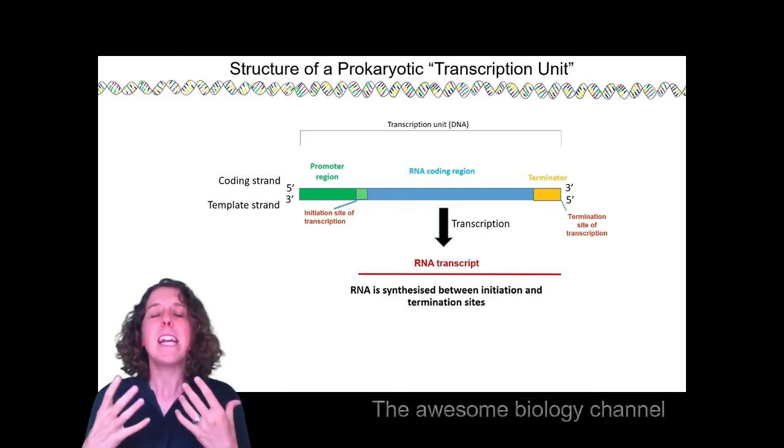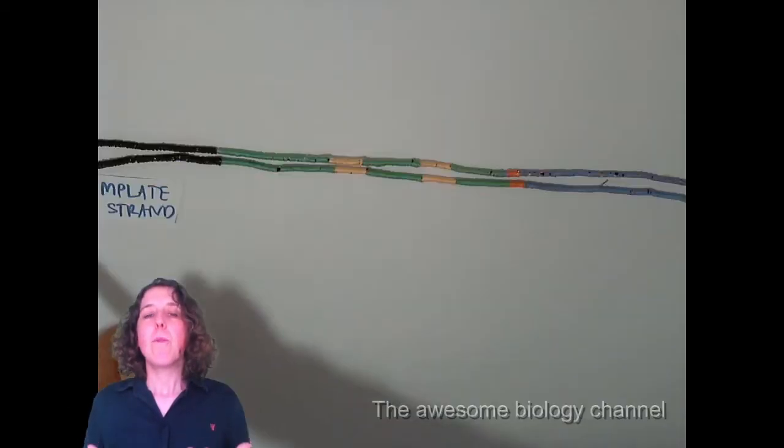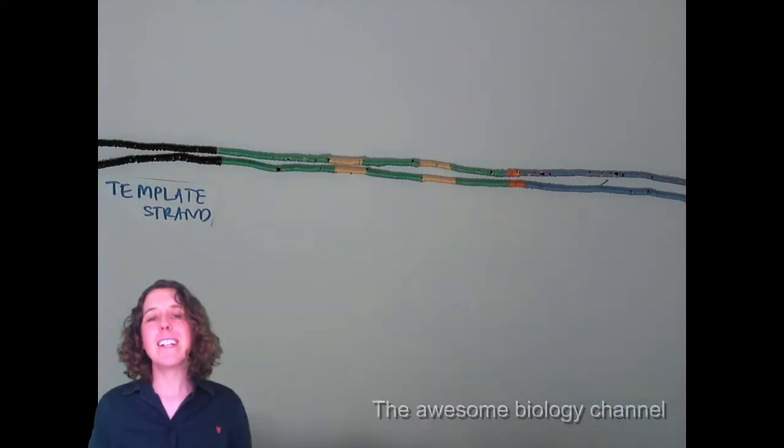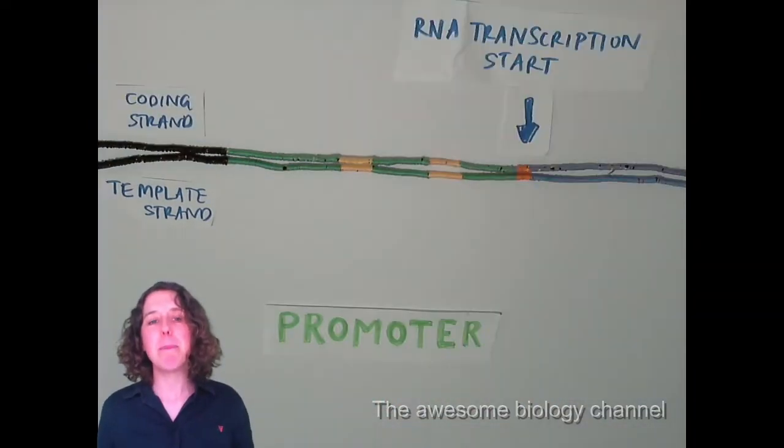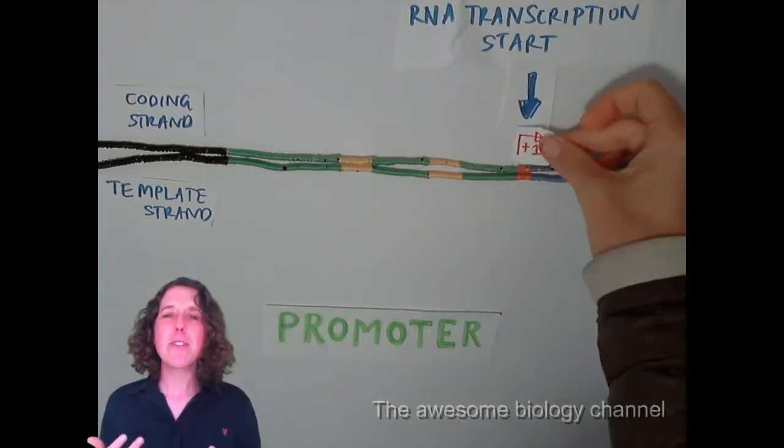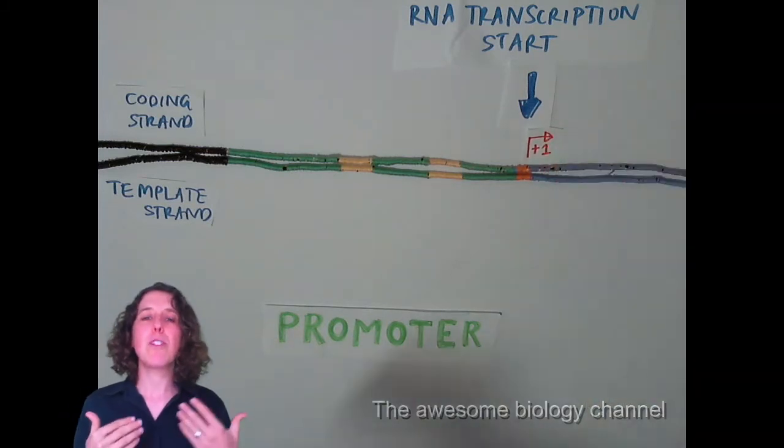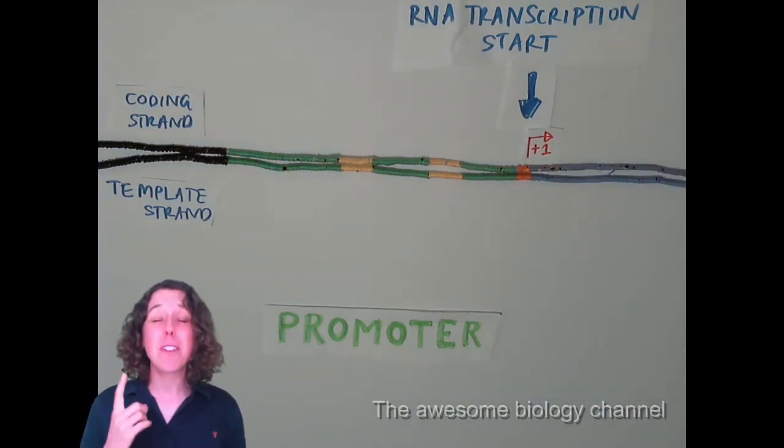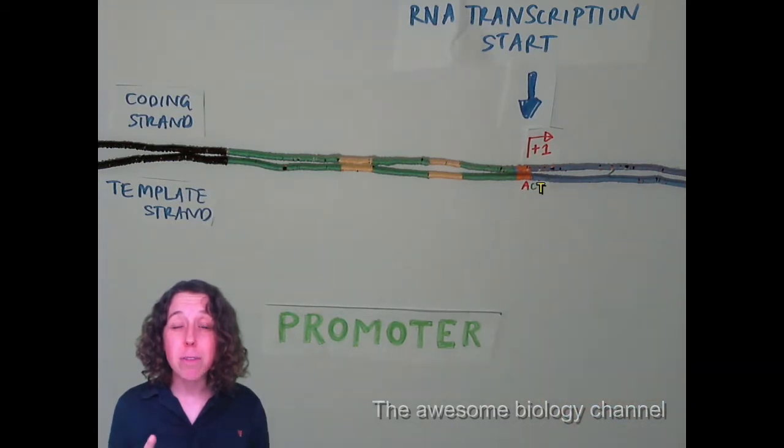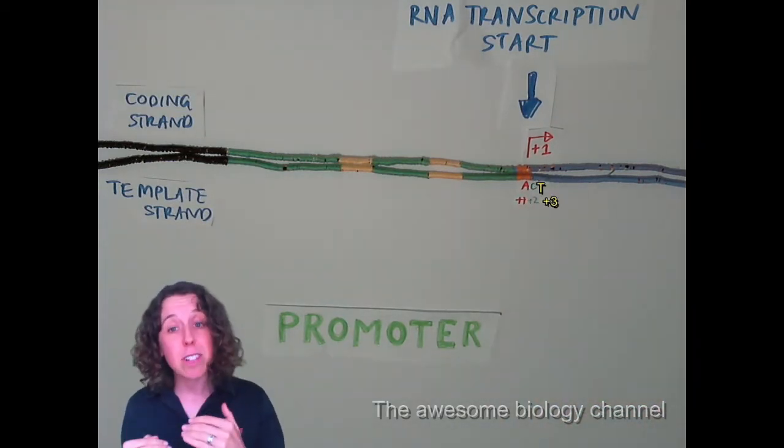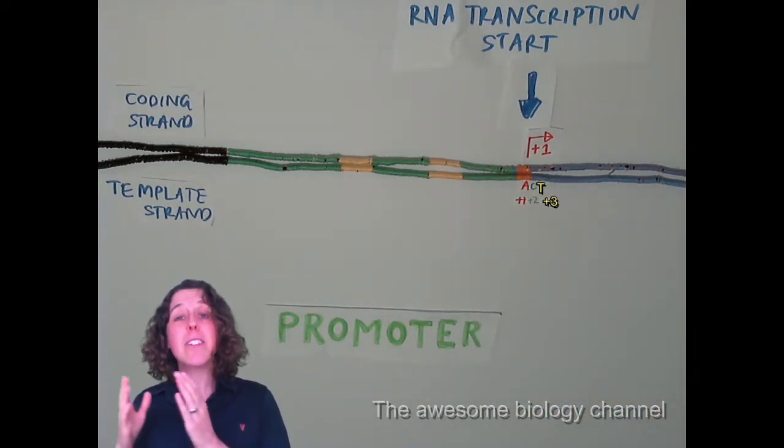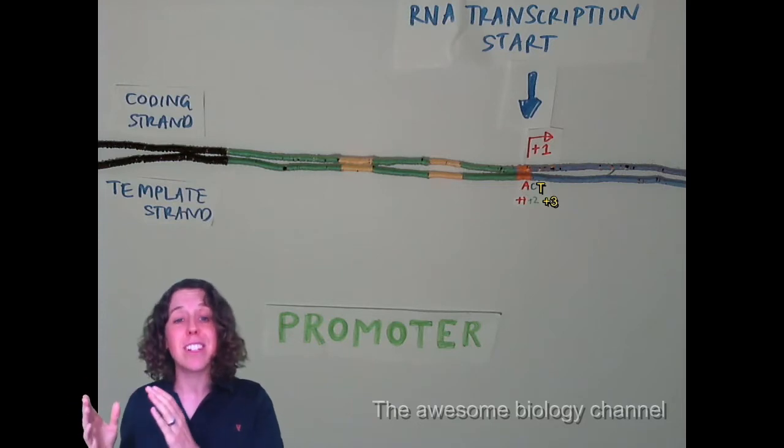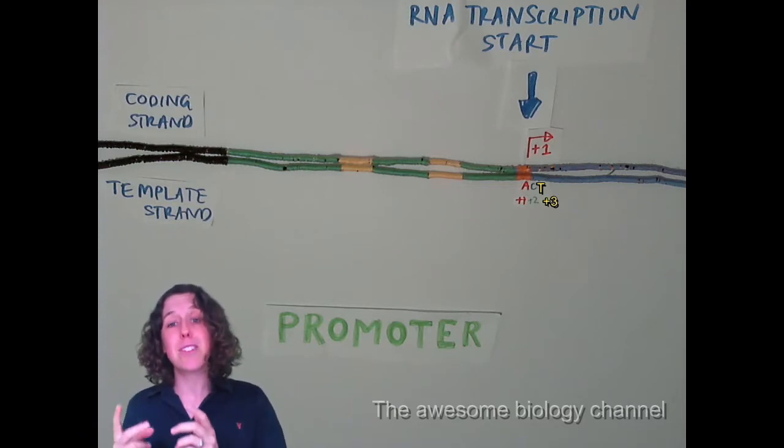If we can see this in embroidery cotton form, we've got here a template strand and up the top the coding strand. Here I am in the promoter, that RNA transcription site is sometimes referred to as plus one, and that really just refers to the very first nucleotide of DNA that's going to get transcribed into RNA, and we use this to number the rest of the nucleotides too, so the second one will be plus two, and the third one will be plus three.